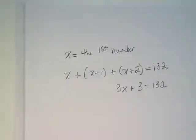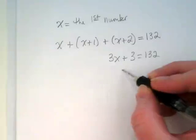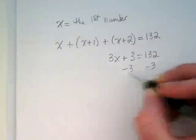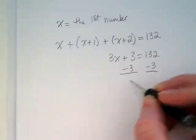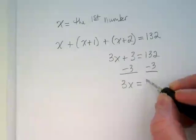What should our next step be? I heard subtraction. What are we subtracting? The 3. 3X then is equal to 129.